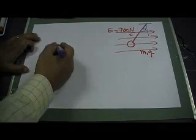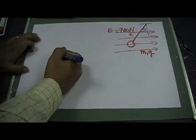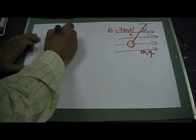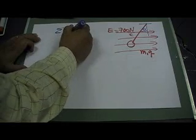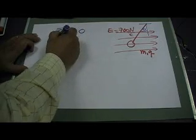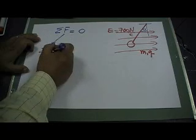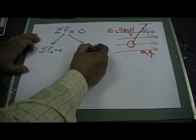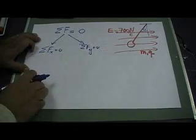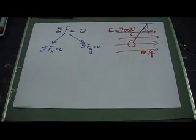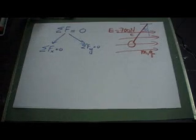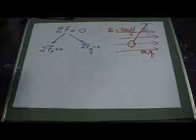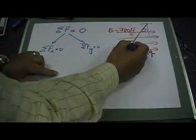To solve this problem we have to go back to our physics one and recall that when an object is at rest, the sum of the forces is equal to zero. That means the sum of the forces along the x-axis is equal to zero and the sum of the forces along the y-axis is equal to zero. So we have to draw our free body diagram, and from this free body diagram we can find the solution.